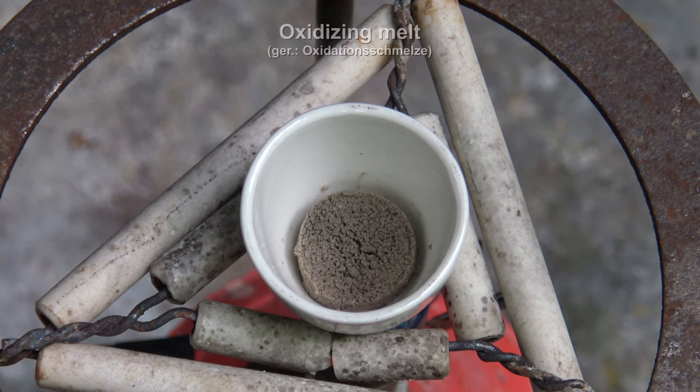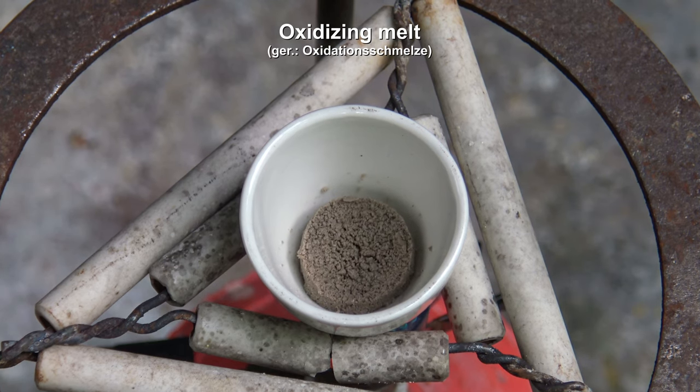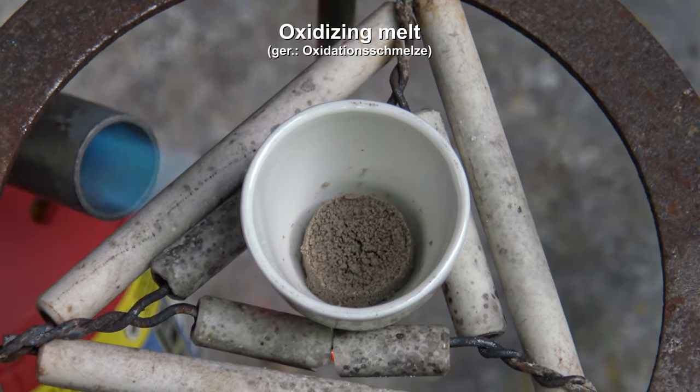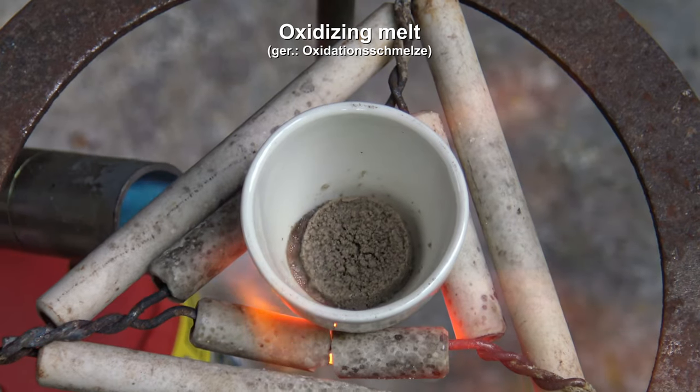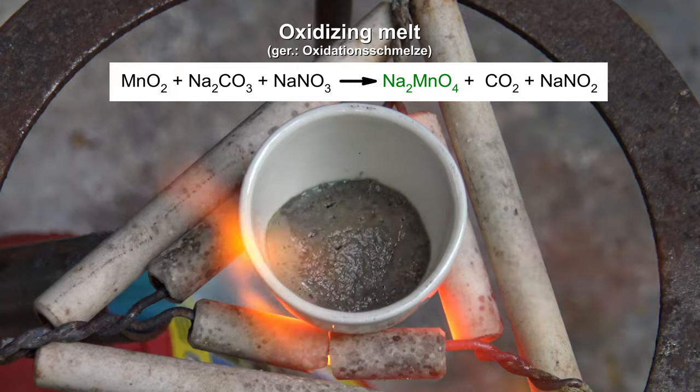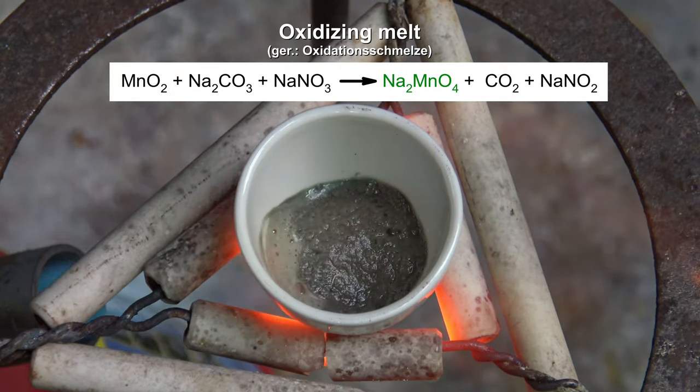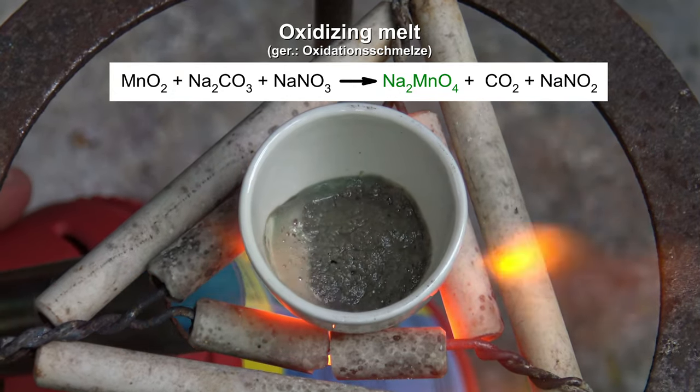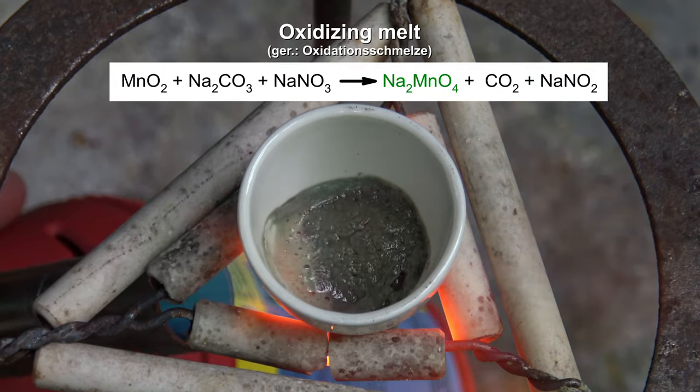This test can be translated as oxidizing melt, which is used to test for chromium and manganese ions. In this case, the manganese, which is mainly present in the form of manganese dioxide, is oxidized to the green manganate-6, while CO2 is released and the nitrate is reduced to the nitrite.